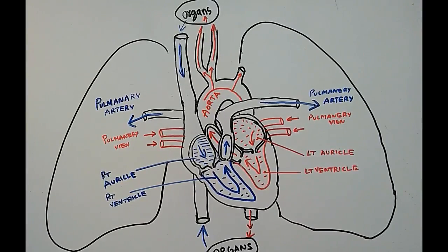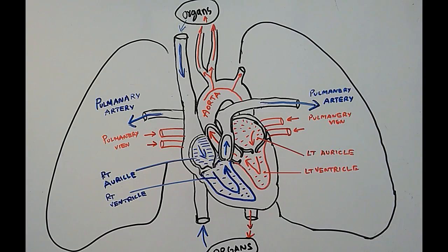Hello friends, welcome to Sunil Engineering Academy. Today we are going to see about the circulatory system. Blood circulation was firstly discovered by William Harvey in the year 1628. The main parts of the circulatory system are the heart, arteries, veins, blood, and lungs.